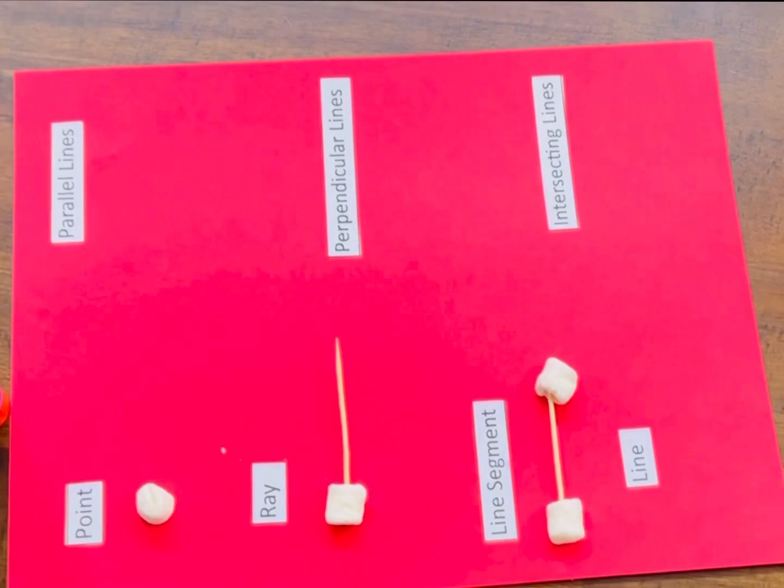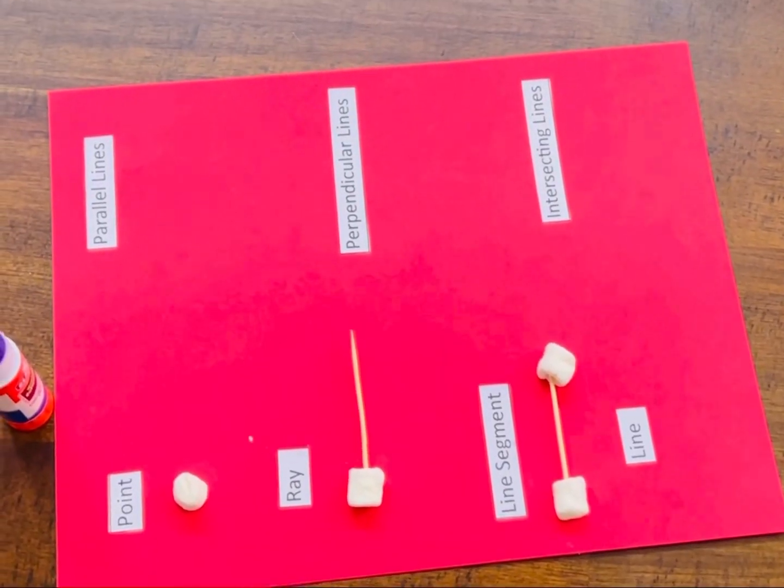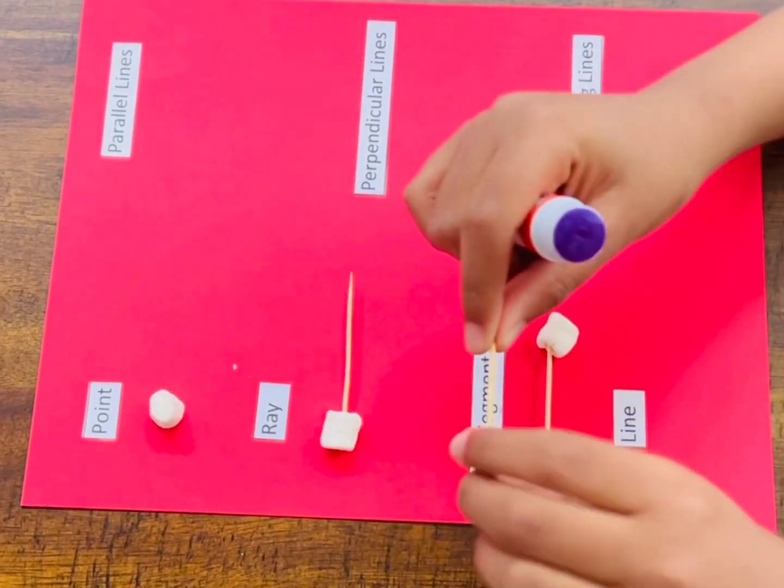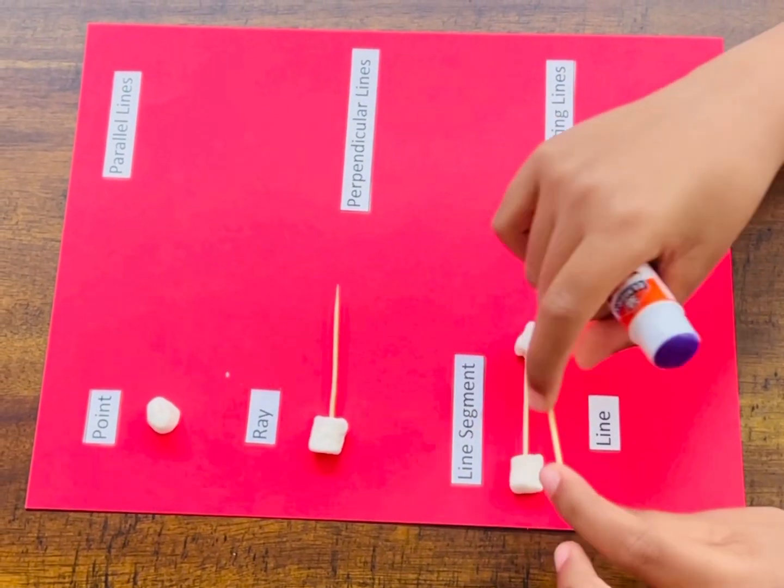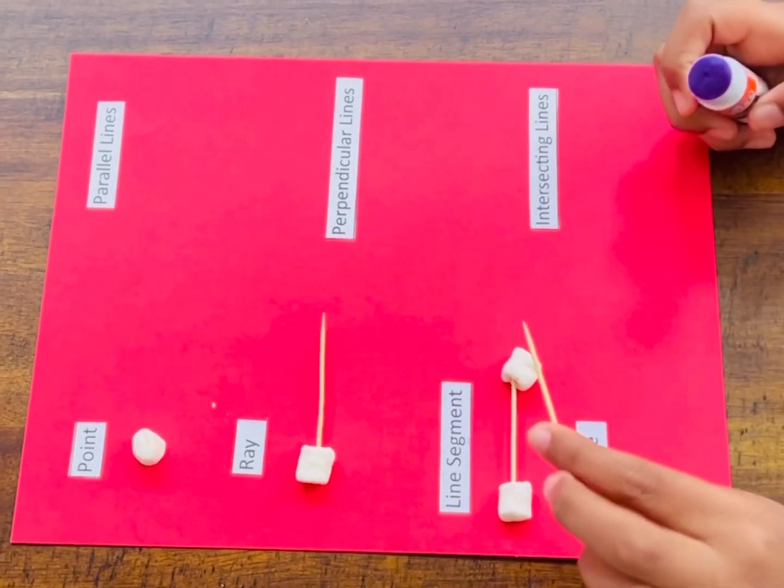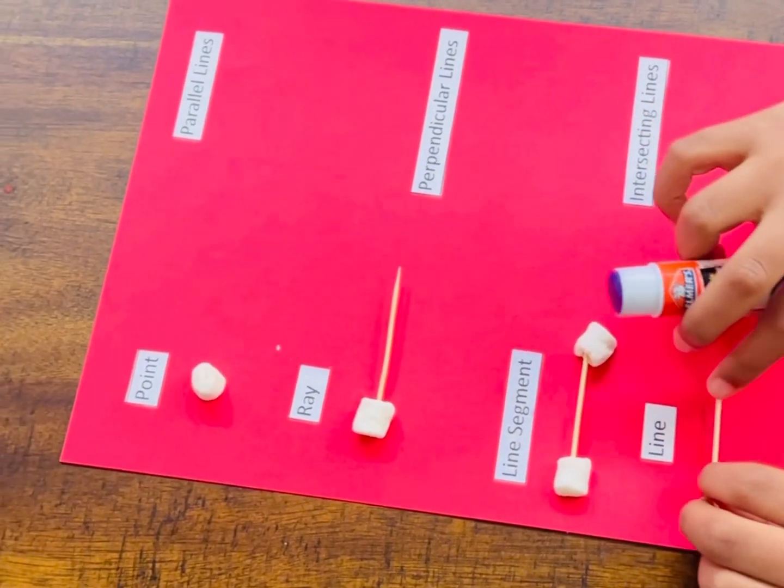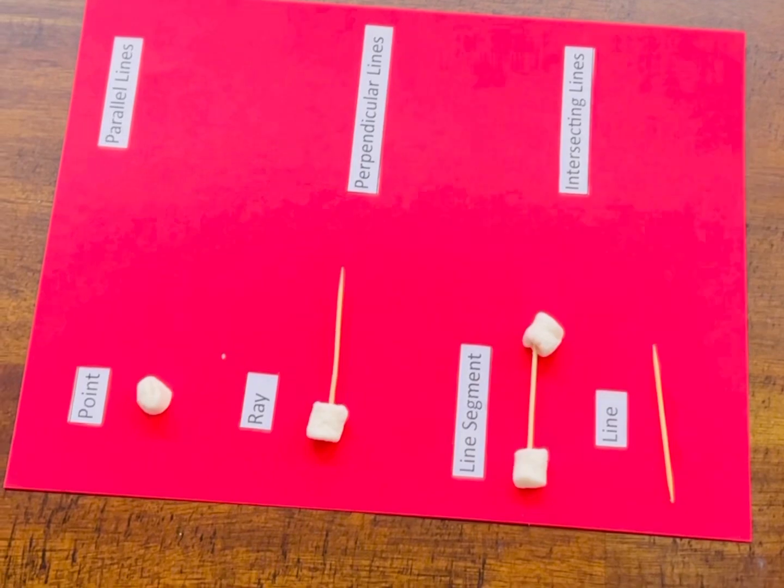Let's do a line. So a line is going to be this. With no marshmallows, it will keep on going in this side, and this side will keep on going, and it will never end. It will keep on going in both directions. And it also has arrows.